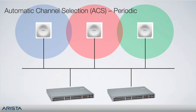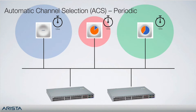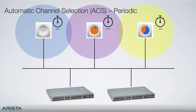Periodic ACS occurs every selection interval, which is configurable and by default is 12 hours. This uses constant scanning data from the third radio of our tri-radio APs or with background scanning in our dual radio APs. If a change is needed due to performance impacting conditions on multiple APs, a randomized timer is again used to minimize the chance that APs select the same channel.